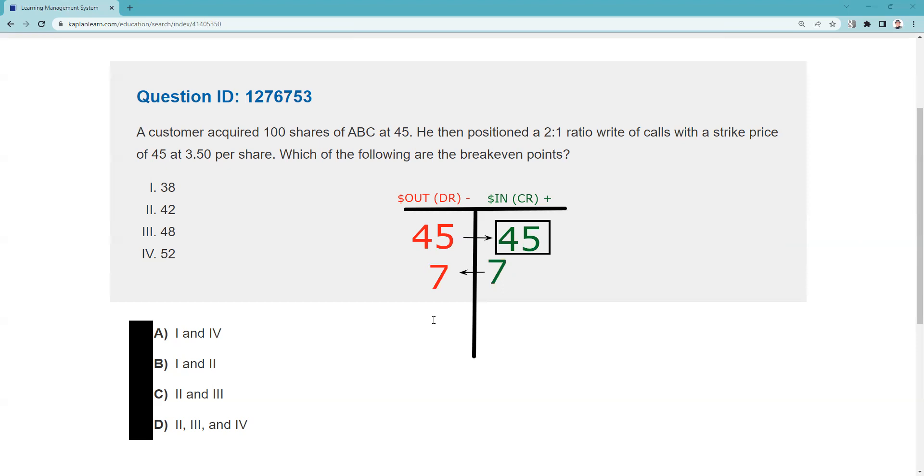Okay, well anyways, hope that was helpful. Again, remember, inch by inch, your Series 4 or 9 is a cinch. Yard by yard, your Series 4 or 9 is hard. And then remember, the main point on the test is to recognize that ratio writes expose this customer to unlimited risk. Past 52, we're going to start bleeding, hemorrhaging losses. Okay, see you next time.